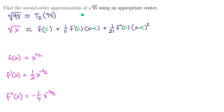Now let's figure out the center. We need a center that is approximately 95, but we also need to be able to plug it into the square root function — so we need a number that's easy to take the square root of and close to 95. A center of 100 is a reasonable choice.